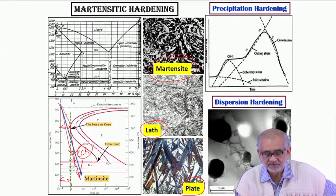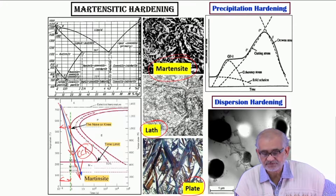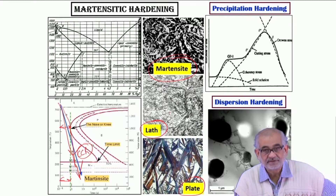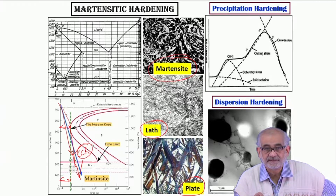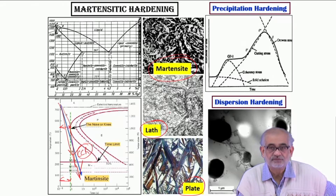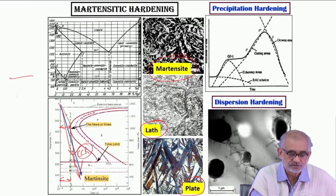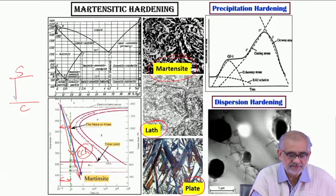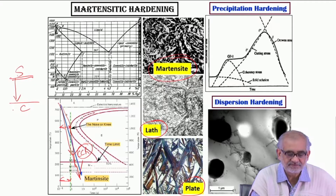This is a typical microstructure that we aim to achieve on the surface. But we are also aware that the carbon content and cooling rate both actually decrease as we go from the surface to the core. If this is the surface and this is the core, then carbon content is highest here and gradually decreases.